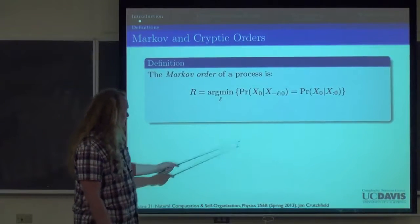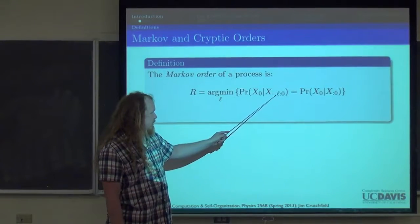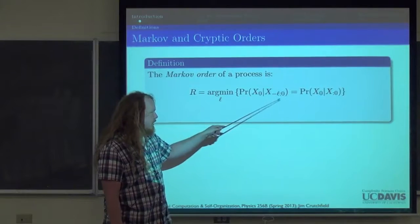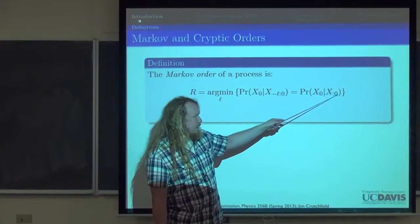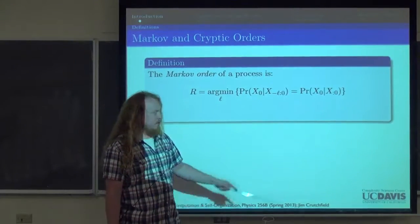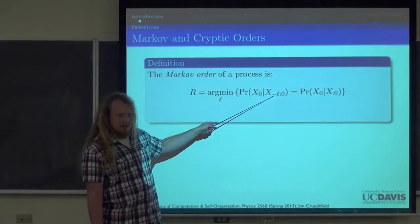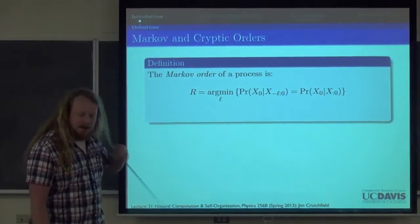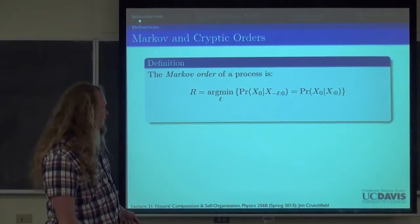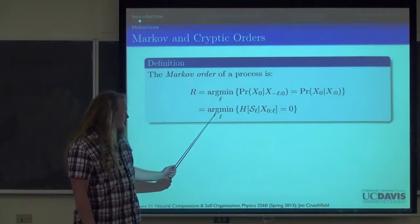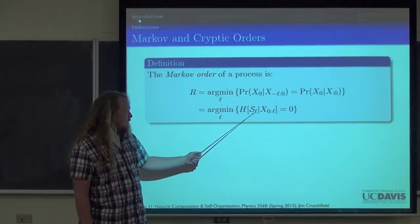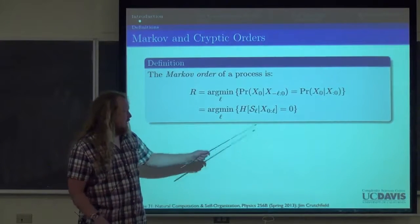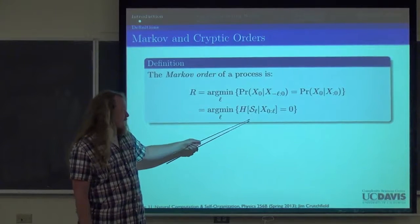The Markov order of a process is the minimum length L such that the probability of the next symbol upon observing the previous L symbols is equivalent to the probability of the next symbol upon seeing all the previous symbols. Instead of looking at the infinite past, if you only have to look at a length-L past, the Markov order is the shortest such L at which you still have equivalent predictive ability. We can rewrite that using causal states: it's the smallest L such that the entropy over the L-th state conditioned on the previous L symbols equals zero — given L symbols, you know exactly what state you're in.